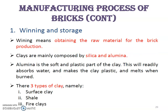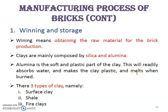The first process is winning and storage. Winning means obtaining the raw materials for brick production from the site. Clay is mainly composed of silica and alumina. Alumina is the soft and plastic part of the clay. Alumina will absorb water and make the clay plastic. It also melts when burned.